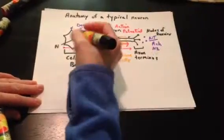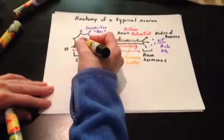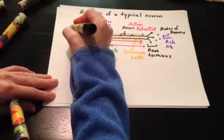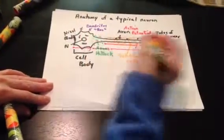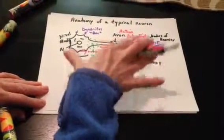And finally, we have Nissel bodies here in the cell body. Nissel bodies are just regions where we have a lot of rough ER located there to manufacture the neurotransmitters. So these are the things you want to be able to identify and label on a typical neuron.